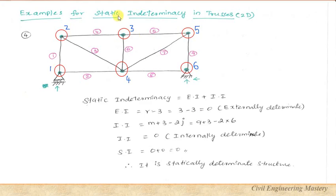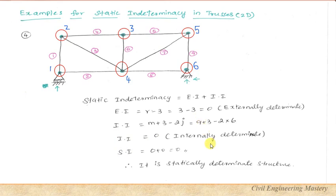Next example: total number of reactions = 3, so external indeterminacy = 3 − 3 = 0 — the truss is externally determinate. Internal indeterminacy = m + 3 − 2j = 9 + 3 − 2(6) = 0 — the truss is internally determinate as well. Therefore overall static indeterminacy = 0 and this truss is statically determinate.